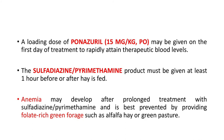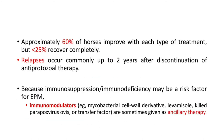Anemia may develop after prolonged treatment with sulfadiazine-pyrimethamine and is best prevented by providing folate-rich green forage such as alfalfa hay or green pasture. Approximately 60% of horses improve with each type of treatment, but less than 25% recover completely. Relapses occur commonly up to two years after discontinuation of therapy. Because immunosuppression or immunodeficiency may be a risk factor, immunomodulators are sometimes given as ancillary therapy.